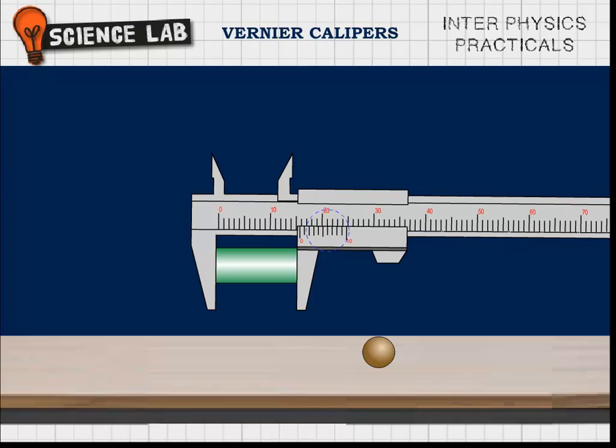This is called main scale reading (MSR). The number of divisions N on the vernier which coincides with any one of the divisions on the main scale is noted. This is called vernier coincidence (VC).